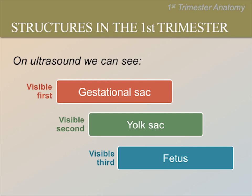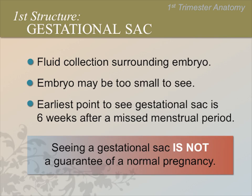It is important that you are able to recognize these structures because this reassures us that the pregnancy is normal. It also helps us to date the pregnancy. The first visible structure is a gestational sac, the second is a yolk sac, and the third visible structure is the fetus. The first structure we are able to see in pregnancy is called the gestational sac — a collection of fluid surrounding the embryo. This starts to appear around 6 weeks after a missed menstrual period. The embryo itself is still too small to see at this point. A pregnancy that is destined to result in a miscarriage may also develop a gestational sac. A sac may also be visible even if the pregnancy is developing in the fallopian tube, called an ectopic pregnancy. So a gestational sac is not a sure indication the pregnancy is normal and healthy.